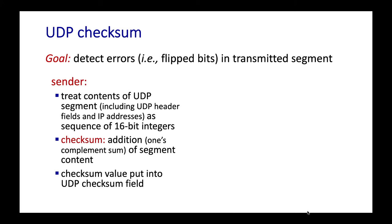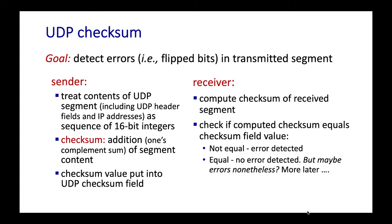The UDP sender and receiver operate analogously. On the sending side, the sender treats the contents of the UDP segment — including UDP header fields and the source and destination IP addresses — as a sequence of 16-bit integers, adds them together, takes the ones-complement sum, computes the checksum, places that value in the UDP checksum field, and drops the segment down to IP. On the receiving side, the receiver computes the checksum of the received segment, including the header and IP addresses, and checks whether it equals the checksum field placed there by the sender. If not equal, there's an indication of an error.